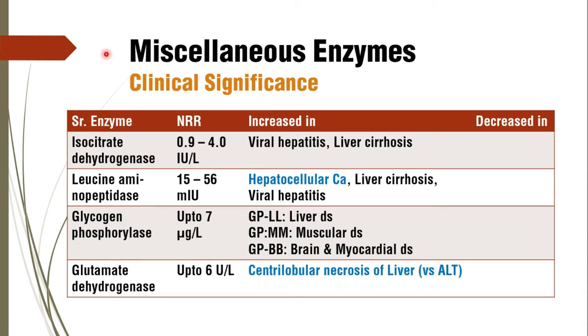Coming to the next enzyme, isocitrate dehydrogenase — in case of viral hepatitis and liver cirrhosis, it is increased. Leucine aminopeptidase is increased in hepatocellular carcinoma, liver cirrhosis, and viral hepatitis.